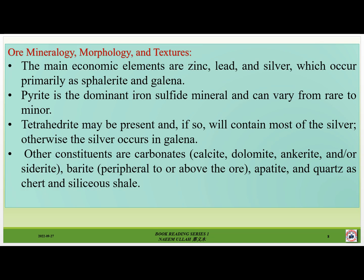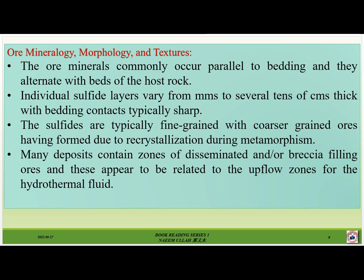Ore mineralogy, morphology, and texture: the main economic elements are zinc, lead, and silver, which occur primarily as sphalerite and galena. Pyrite is the dominant iron sulfide mineral and can vary from rare to minor. Tetrahedrite may be present and, if so, will contain most of the silver; otherwise the silver occurs in galena. Other constituents are carbonates — calcite, dolomite — and barite and/or siderite. Barite is peripheral to or above the ore body, and also occurs as chert and siliceous shale.